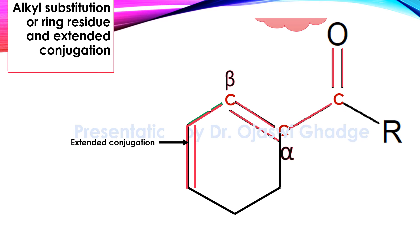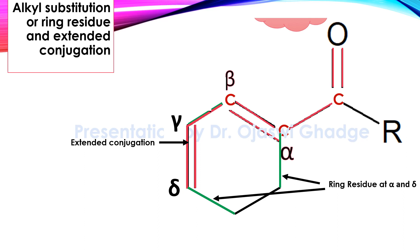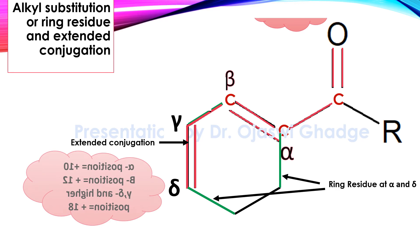Because of this extended conjugation, our basic system extends up to the delta carbon. So now what we have in our basic system: the carbonyl group, then alpha carbon, beta carbon, gamma and delta carbon. On alpha carbon there is a bond and on delta carbon there is a bond — those bonds shown in green color. These bonds are called ring residues at alpha carbon and delta carbon.